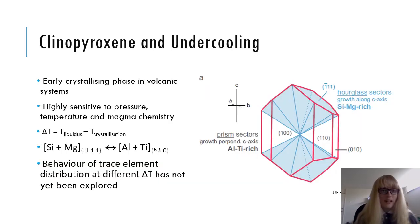Clinopyroxene is an early crystallising mineral and is highly sensitive to changes in magma pressure, temperature and composition, which has allowed for it to be utilised in unraveling magmatic histories and identifying things such as magma recharge events.